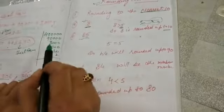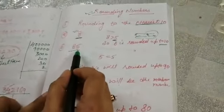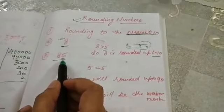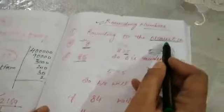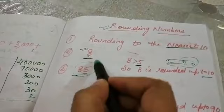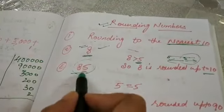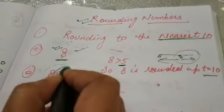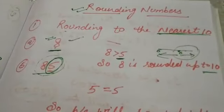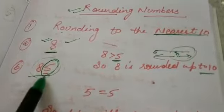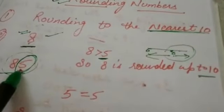Now next we have 2 digits, 85. In 85 we have to see rounding to the nearest 10. With 8 there was only single digit, that's why it's easy. But here are 2 digits. So what we will do? We will see the one's place. What is the number at one's place? Here it is 5.